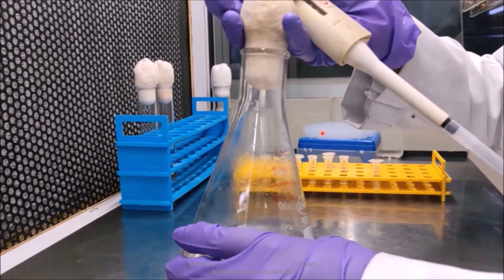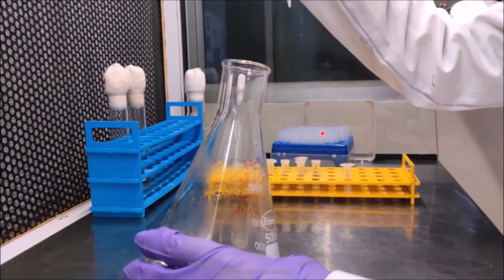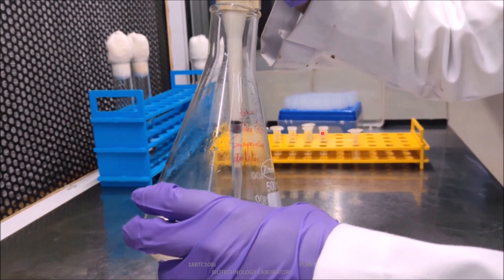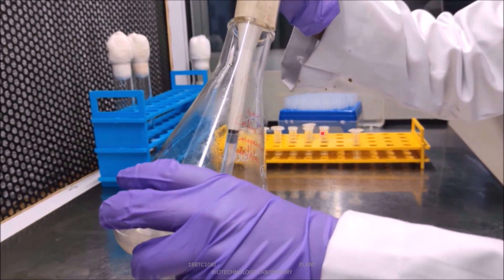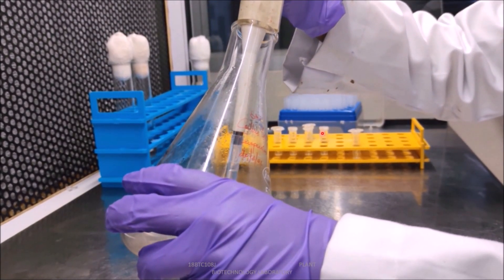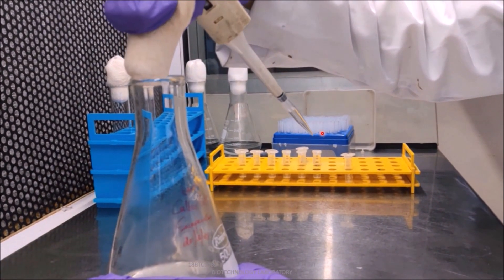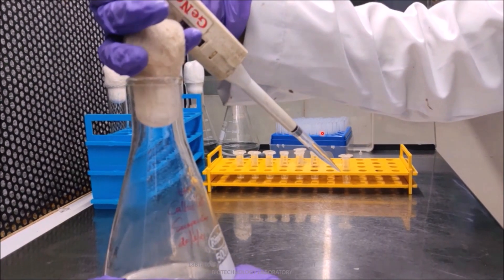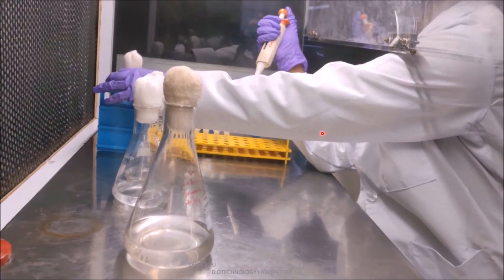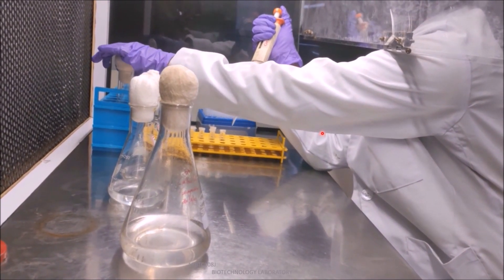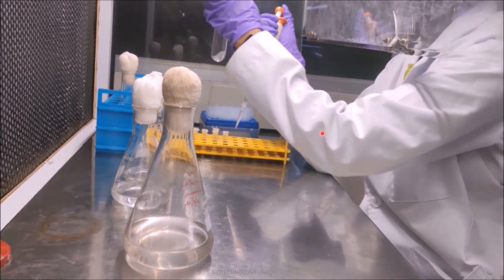Once the cell density and viability were determined, specific volume of cells were distributed into the fresh medium. Here, we have taken suspension culture aliquot volume of 30 ml into 70 ml of fresh liquid medium.